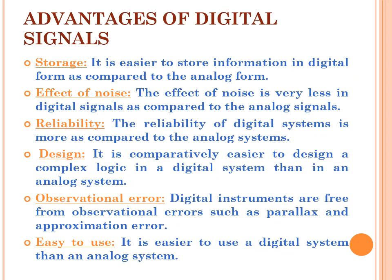What are the advantages of digital signals? Digital signals have quite a few advantages, like storage, effect of noise, reliability, design, observational error, and easy to use. Storage — storing any information in digital form is quite easy in comparison to analog form. Effect of noise — the effect of noise in digital signals is less in comparison to analog signals.